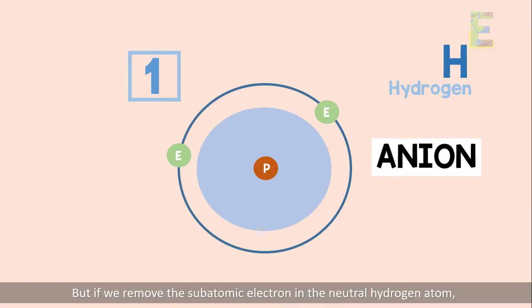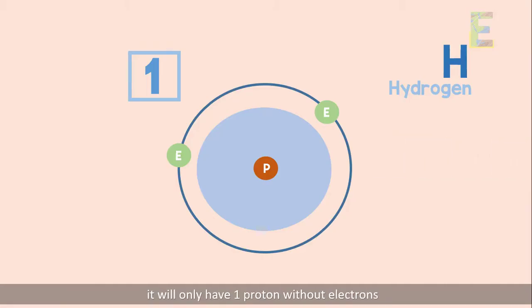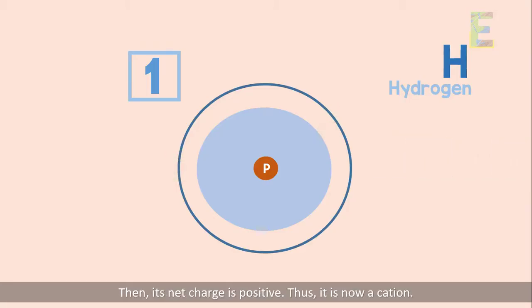But if we remove the subatomic electron in a neutral hydrogen atom, it will only have one proton without electrons. Then, its net charge is positive. Thus, it is now a cation.